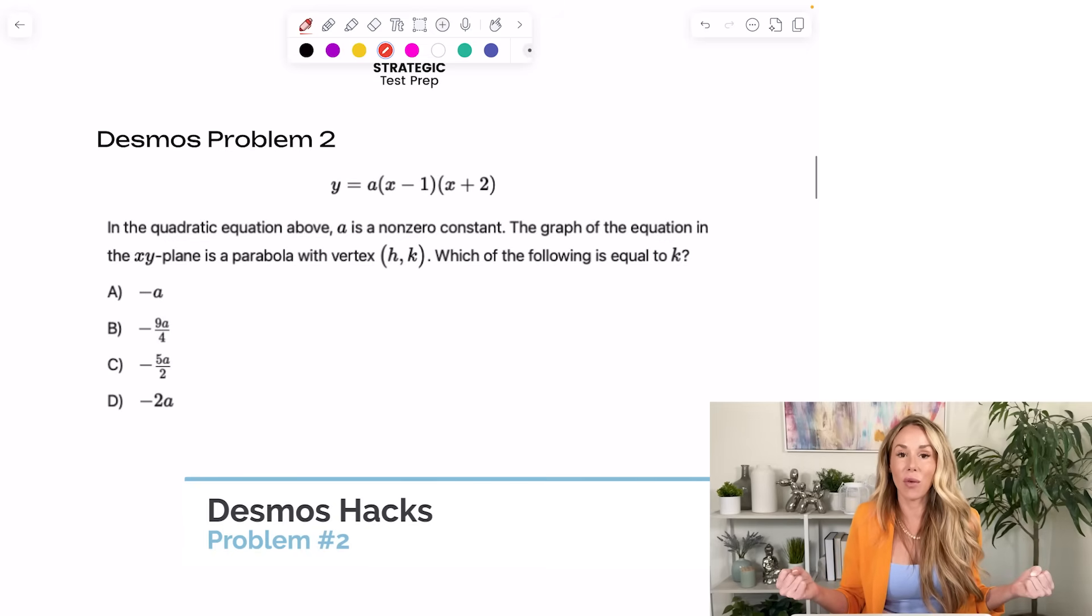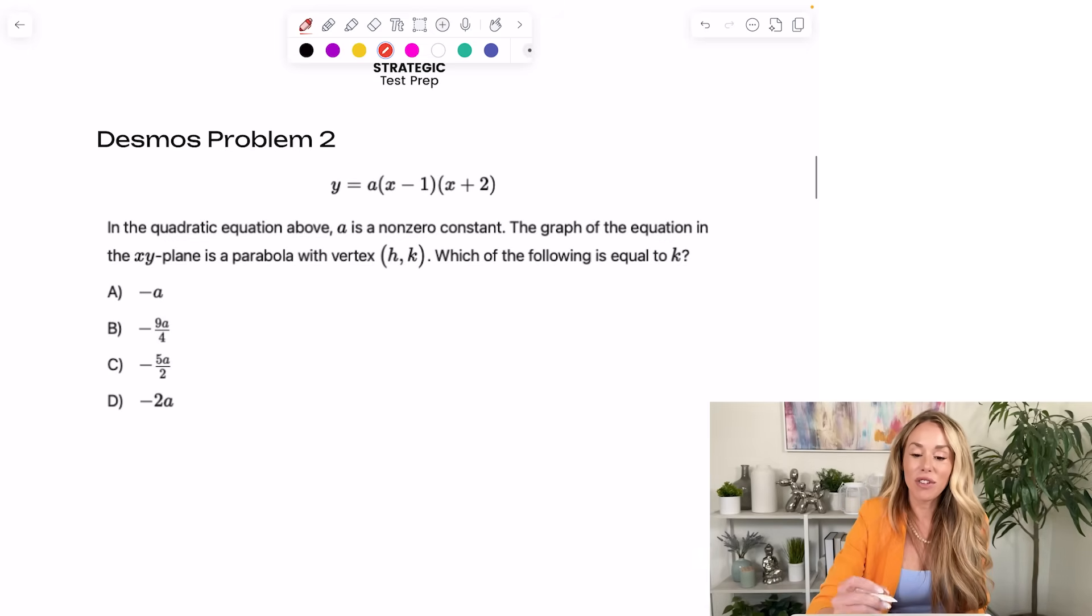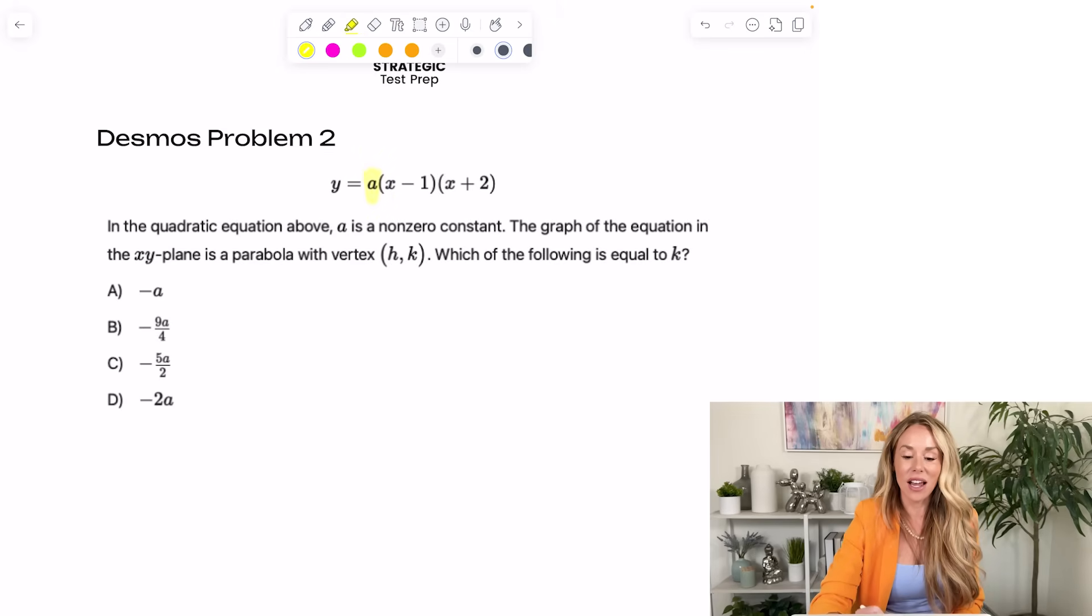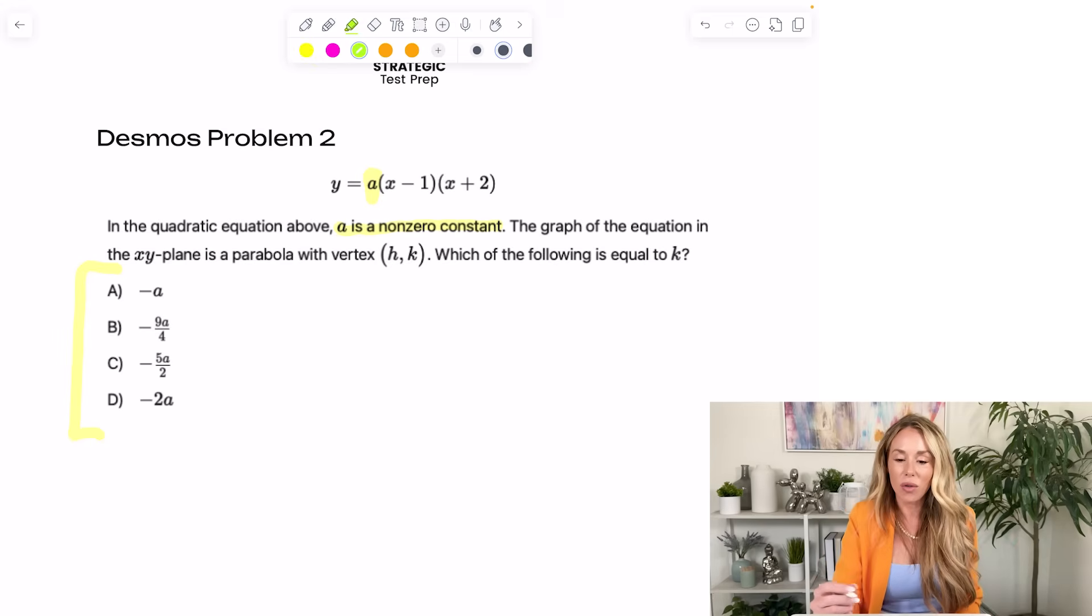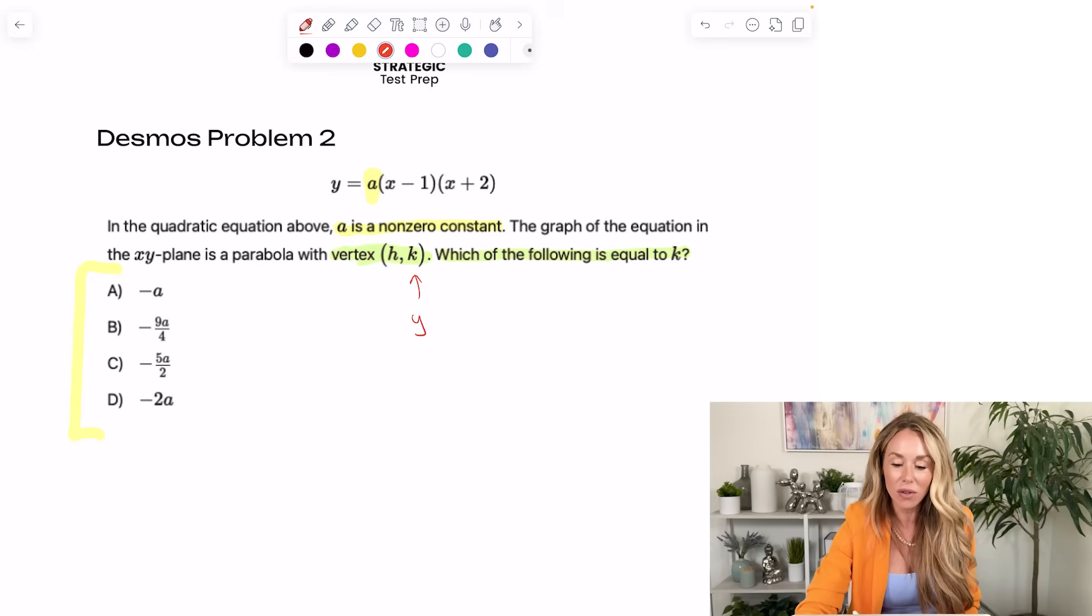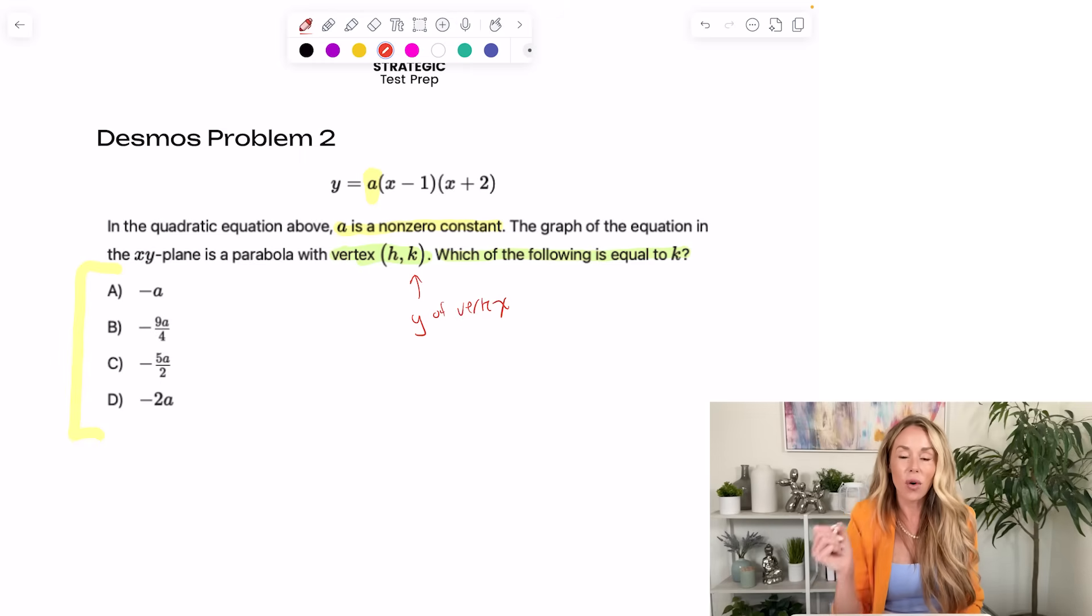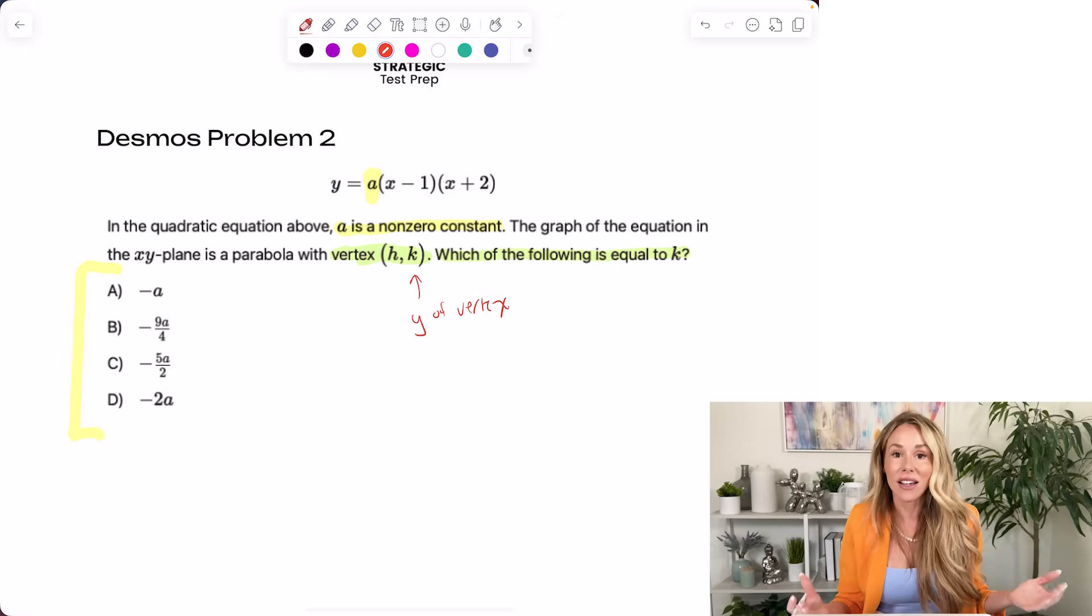Okay, our next problem is really great for Desmos as well. Because if you have one constant, like in this case, they said A is a non-zero constant. You can throw it in Desmos and then move the slider around to get what you want. In this case, you'll notice all of our answer choices have A in them. So they basically want to know which of the following is equal to K. As you can see, K is going to be the Y value of the vertex.